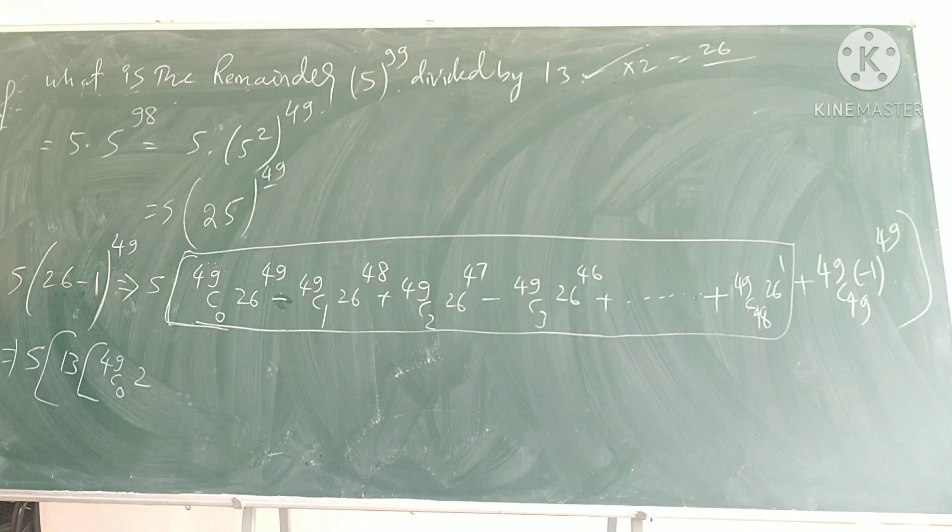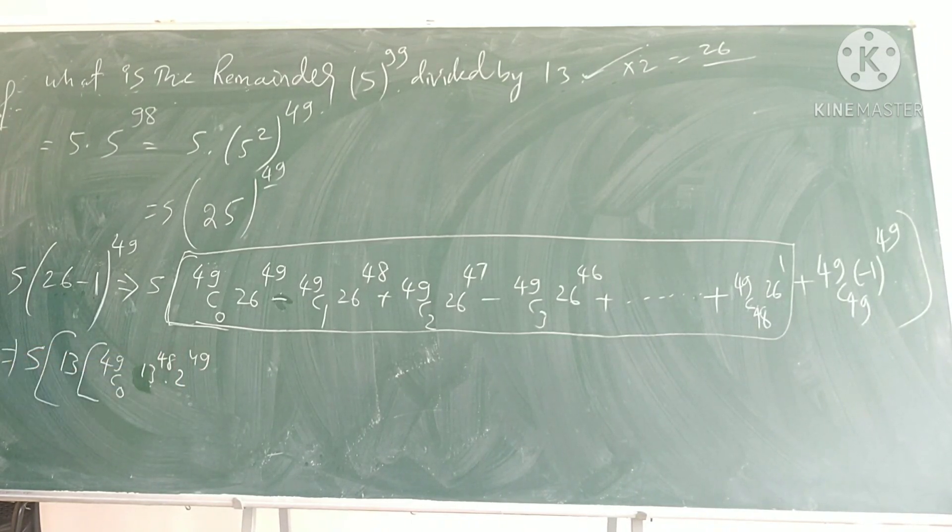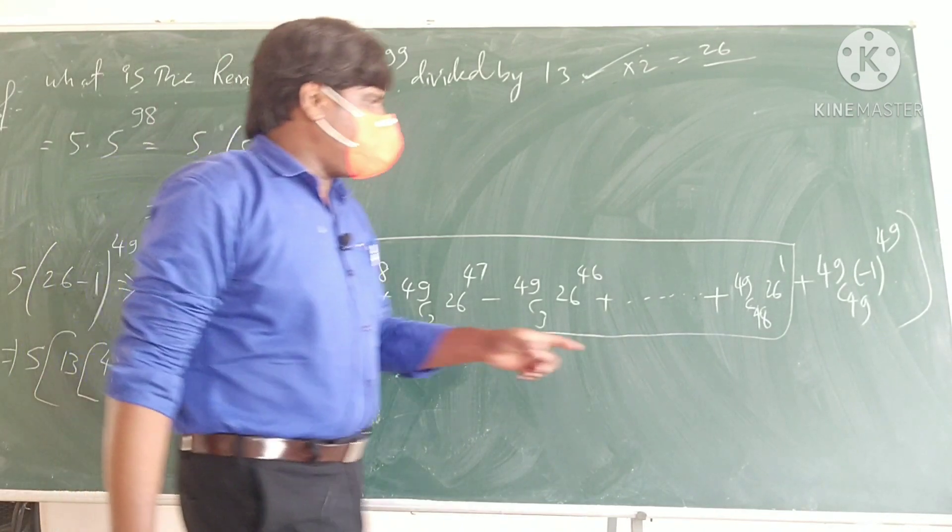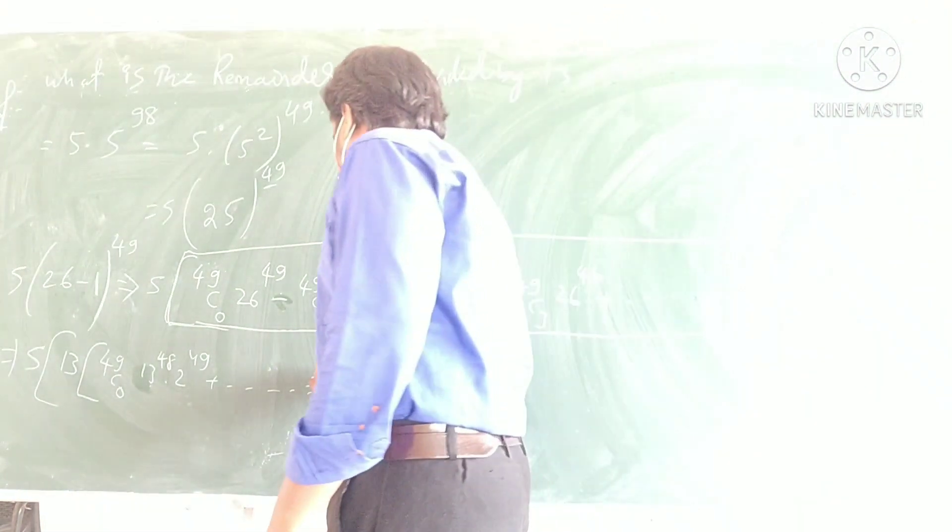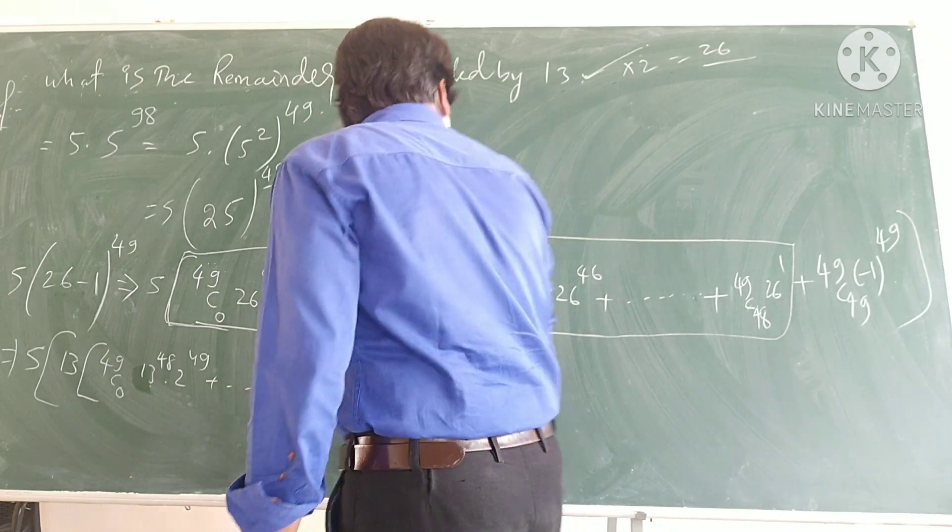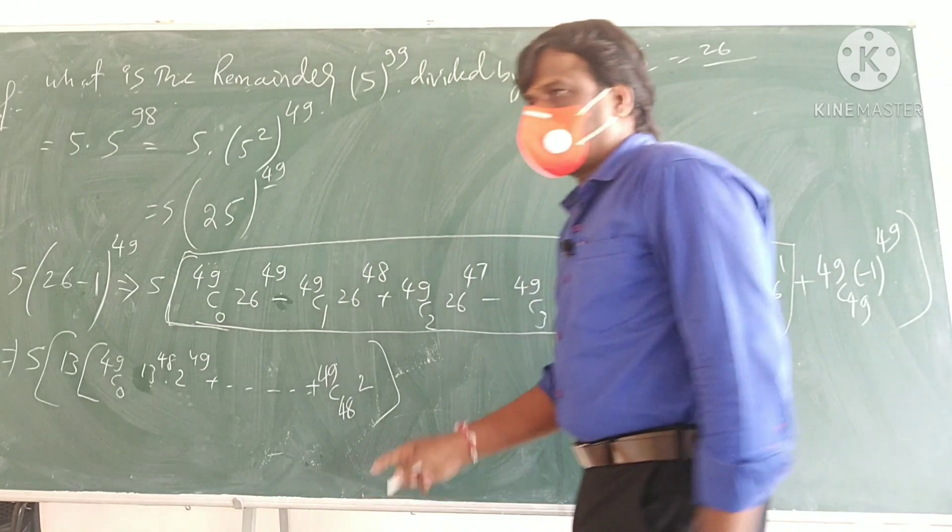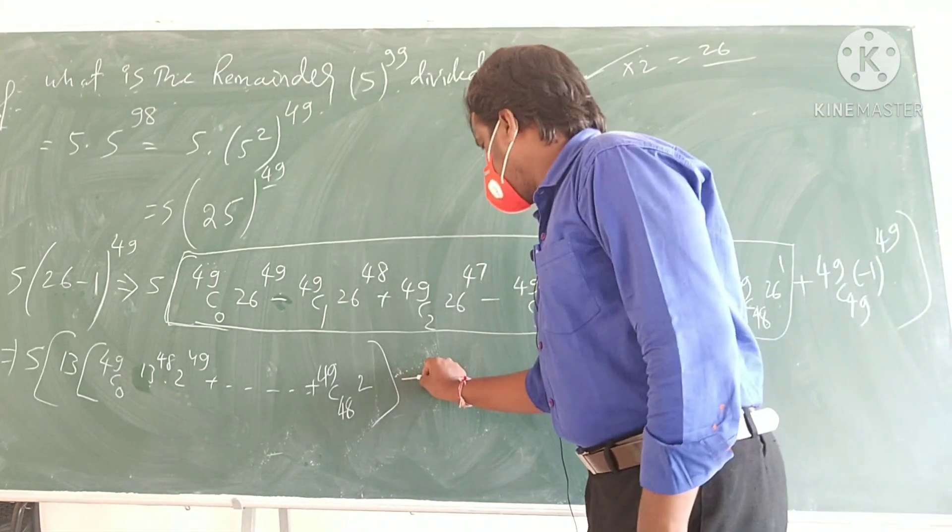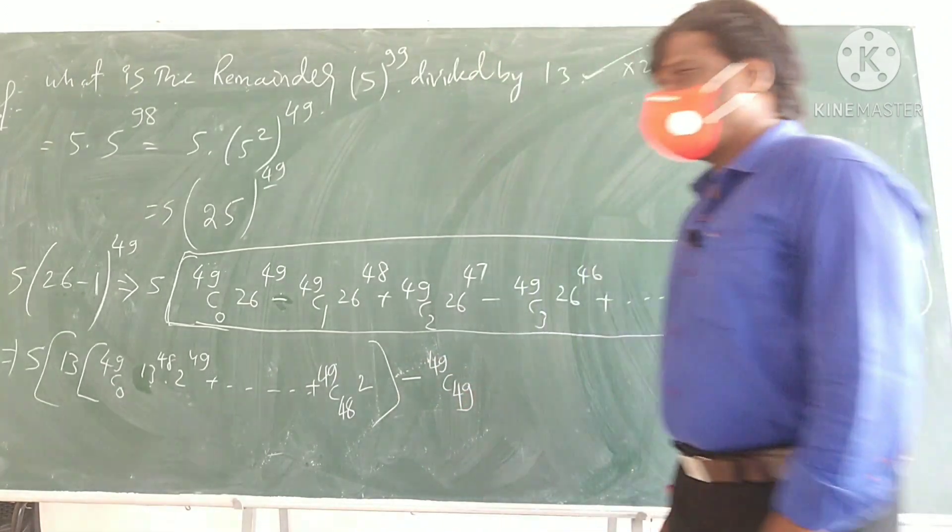So, 13 power something, you get 13 power 48 into 2 power 49, right, likewise you are going to get it. So, here, last here, what I am going to get, plus 49 C 48, I can get into 2, this all 13 will get common, and this last one, I will get minus 49 C 49 I will get, correct, am I right?